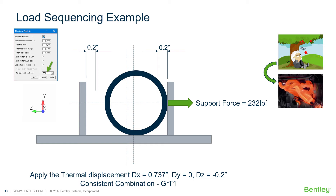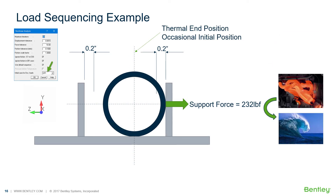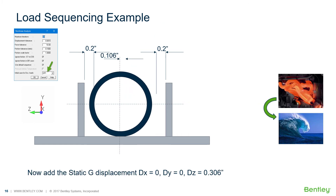The position of the pipe is now the end position of the thermal load case and the initial position for the occasional load case. Next, the occasional load is applied with the end position of the thermal load case as the initial position. The pipe moves away from the stop and the force is removed, moving in the positive z direction by 0.306 inches. There is no horizontal support reaction from the thermal and occasional load as the pipe doesn't touch the support. This combination is GRT1+E1. The net change in position is a positive 0.106 inches in the z direction, taking the negative 0.2 inches from thermal movement and the positive 0.306 inches from occasional earthquake movement. This is the correct consistent result.